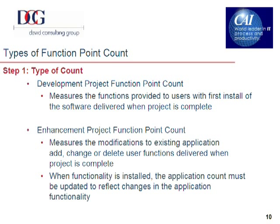There are three different types of counts. A development project function point count measures the functions provided to a user with the first installation of the software when the project is complete. The second type of count is an enhancement project function point count, which measures modifications to existing applications when we add, change, or delete user functionality delivered by the project. That would not include the correction of errors, but would be strictly modifications by the users themselves who have changed what they expect to be achieved by that particular application.